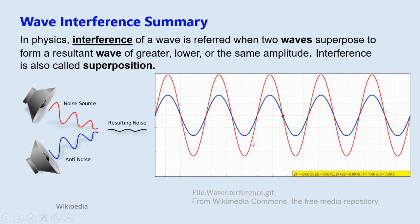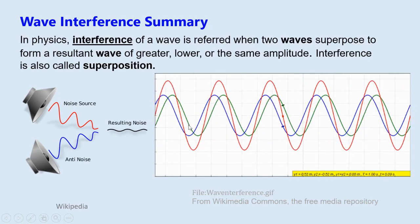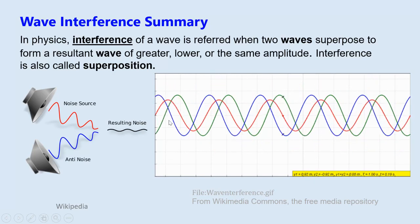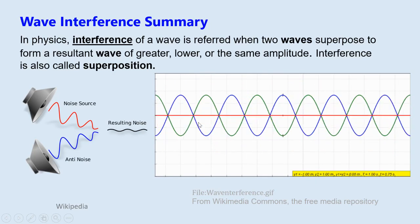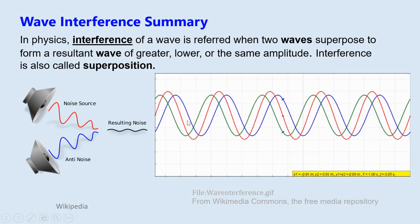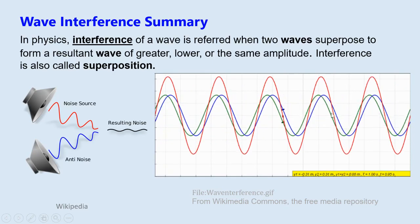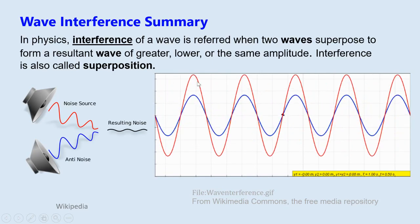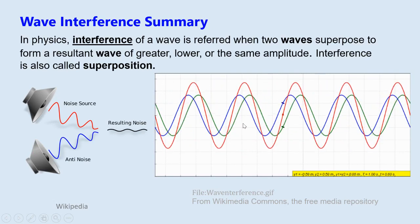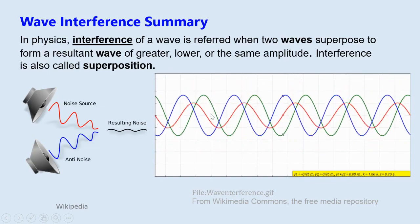On this graph, there are two traveling waves — the blue and the green. When they interact with each other, the resultant is the red wave. The red wave is the resultant of the sum of both the green and the blue waves.